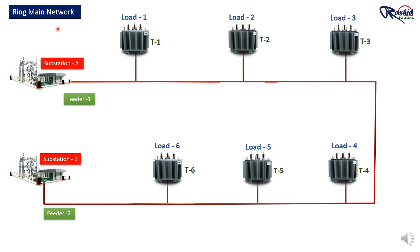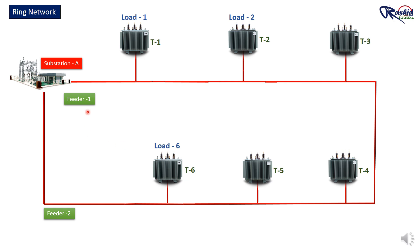What you see on your screen is an example of a ring main network. In this network, we have two feeders from two different substations — Feeder 1 from substation A and Feeder 2 from substation B. Sometimes these two feeders can come from only one substation, meaning Feeder 1 and Feeder 2 connect from the same substation. This setup creates a loop, which means each load can get power from two different sources.